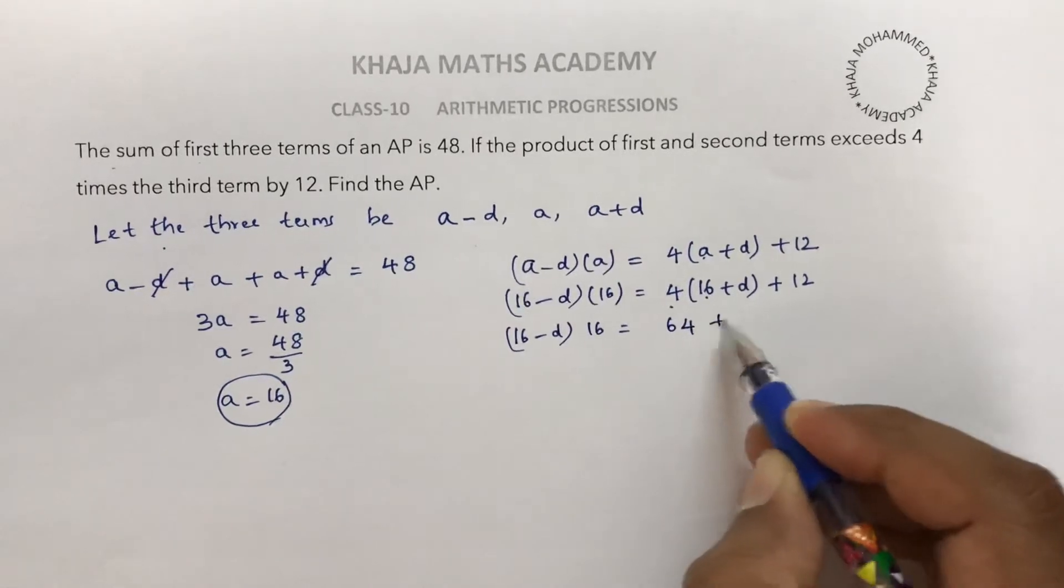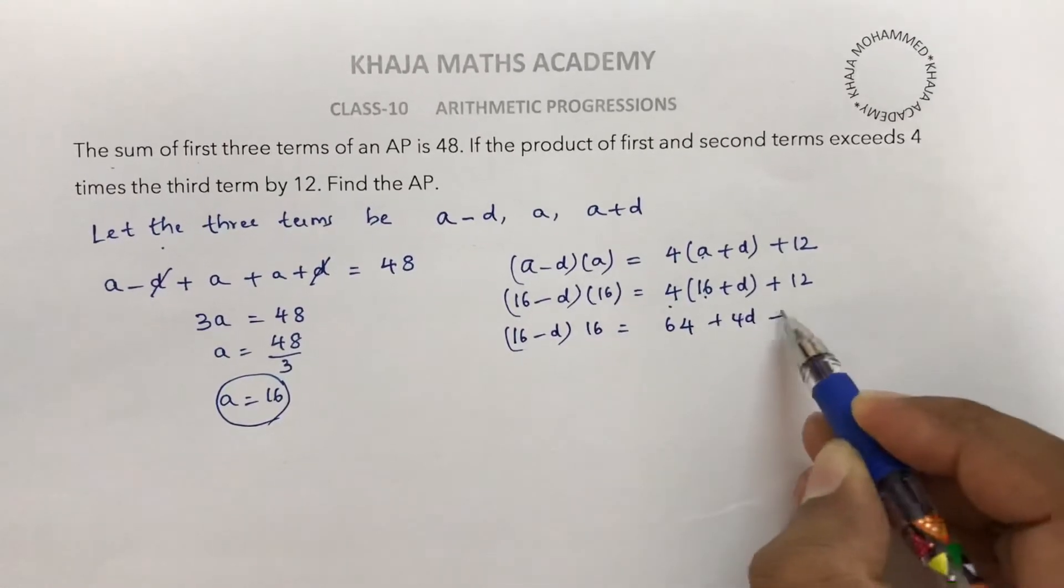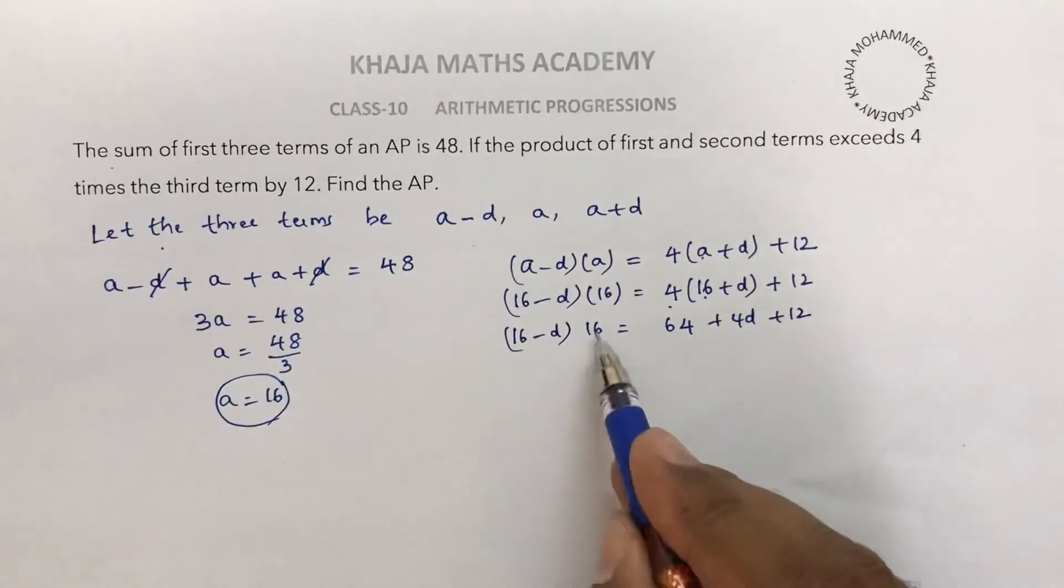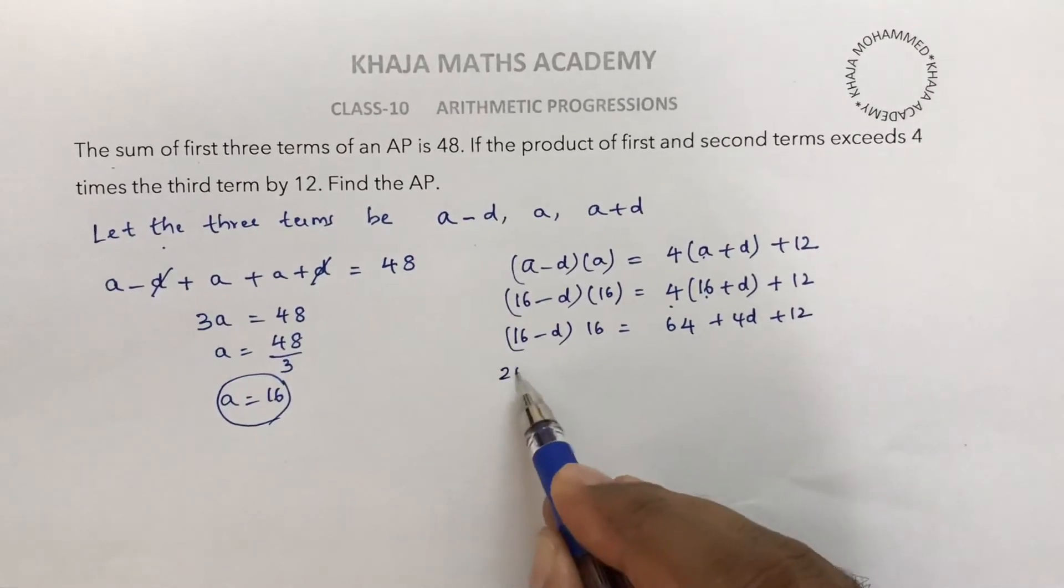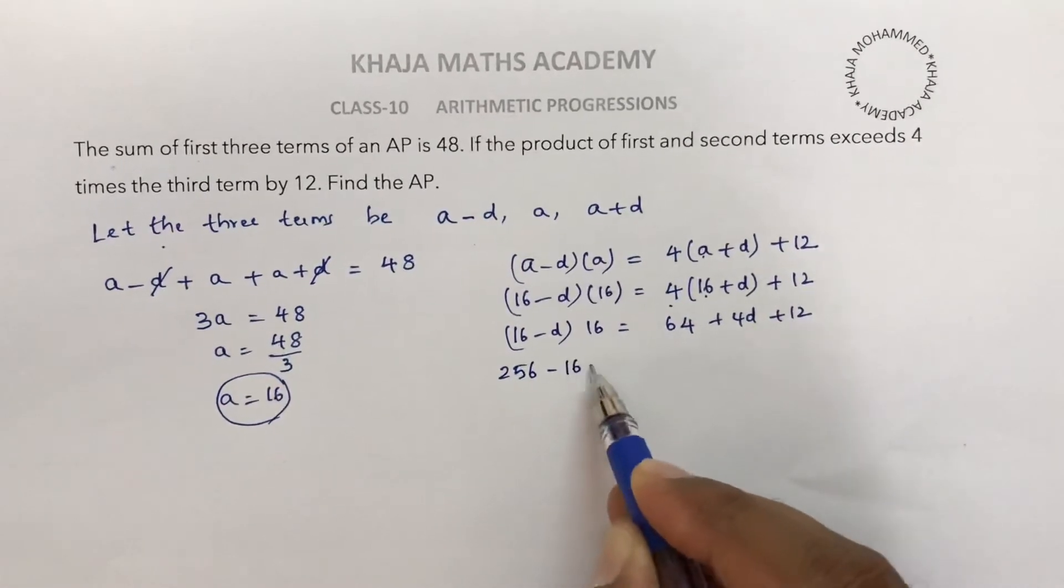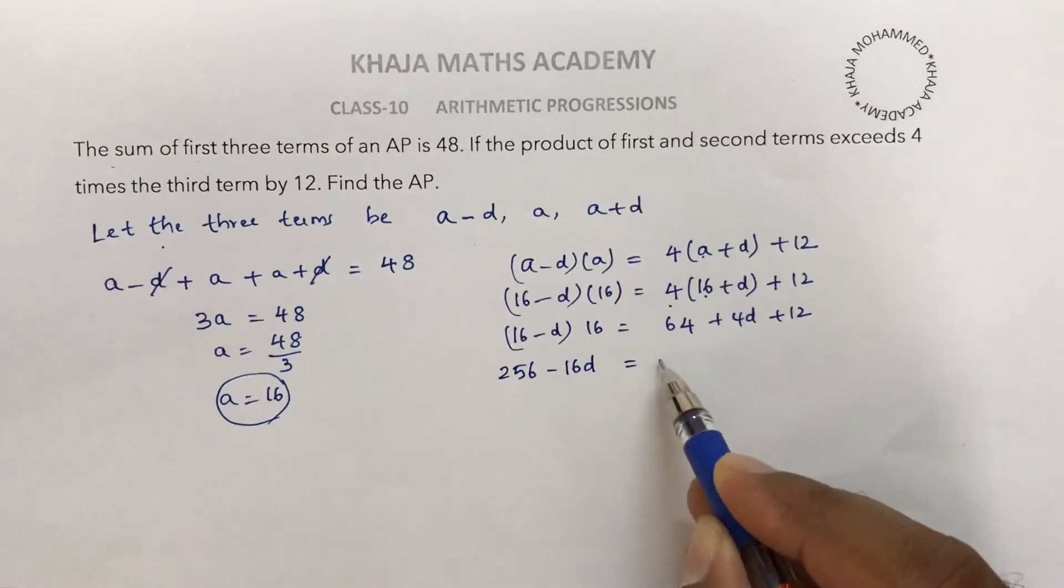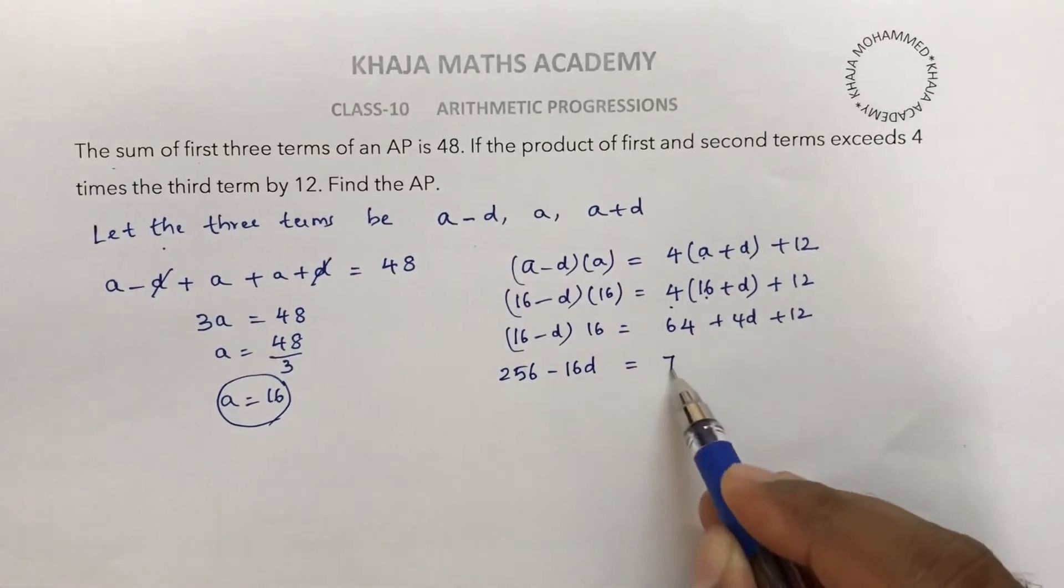So 16 times 16 is 256, giving us 256 minus 16d equals 64 plus 12, which is 76 plus 4d.